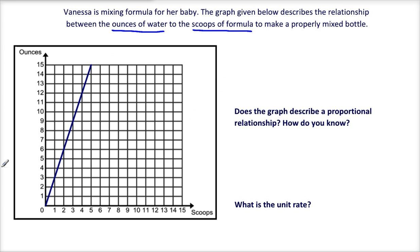This graph represents this relationship. We have scoops along the x-axis and ounces going up the y-axis. The first thing I like to do when I see a graph is make a table of values. Scoops is along the x-axis, so we'll write this one first.